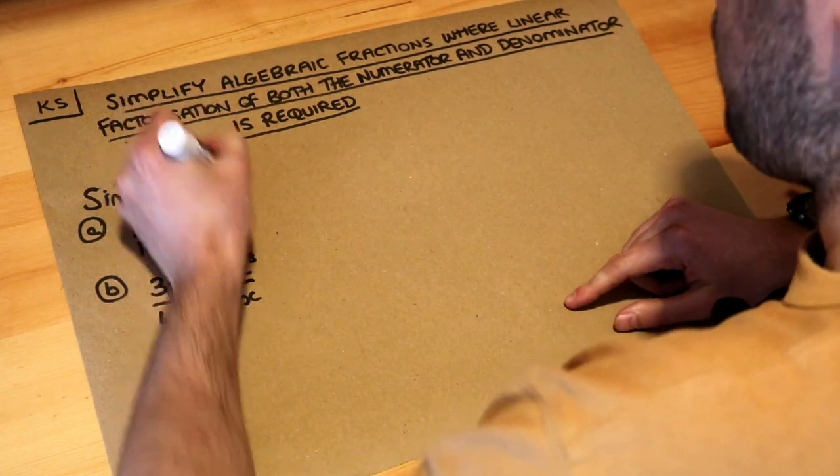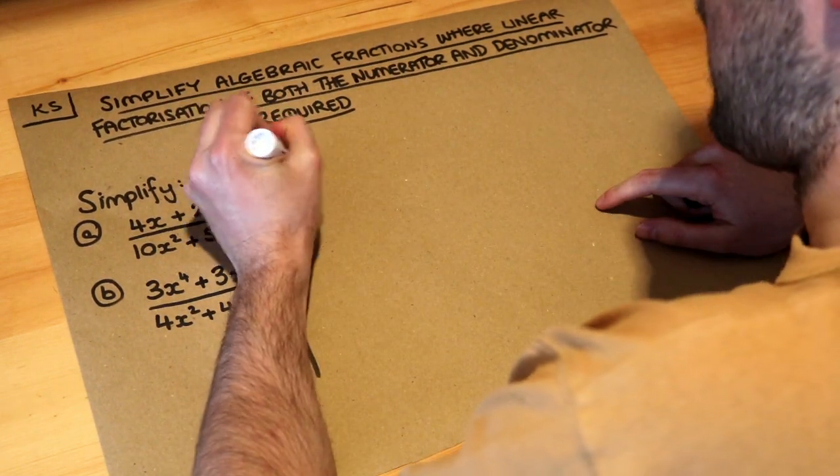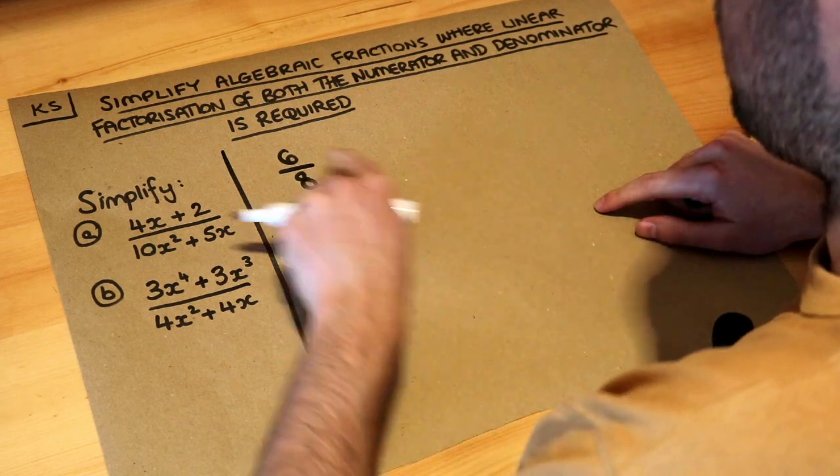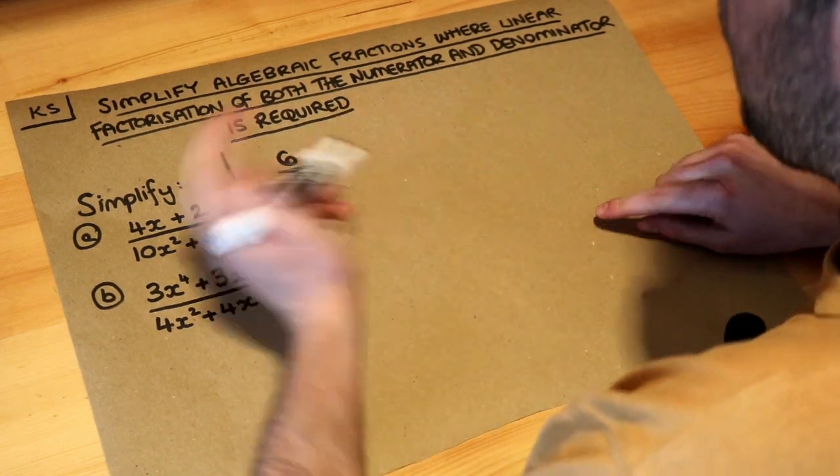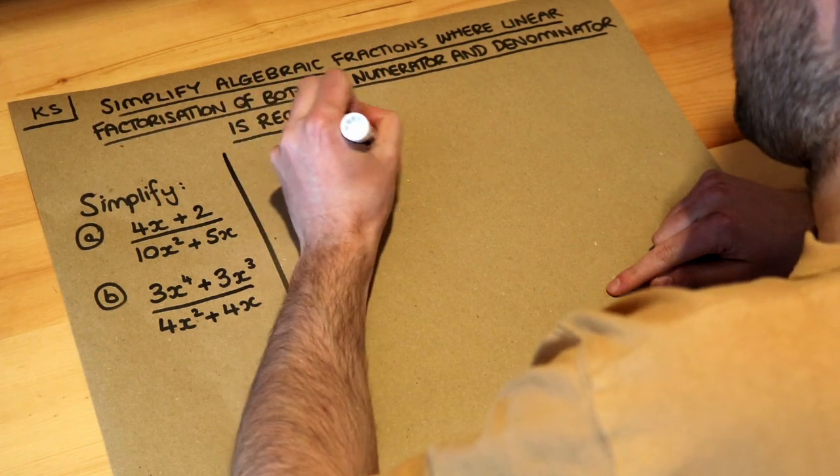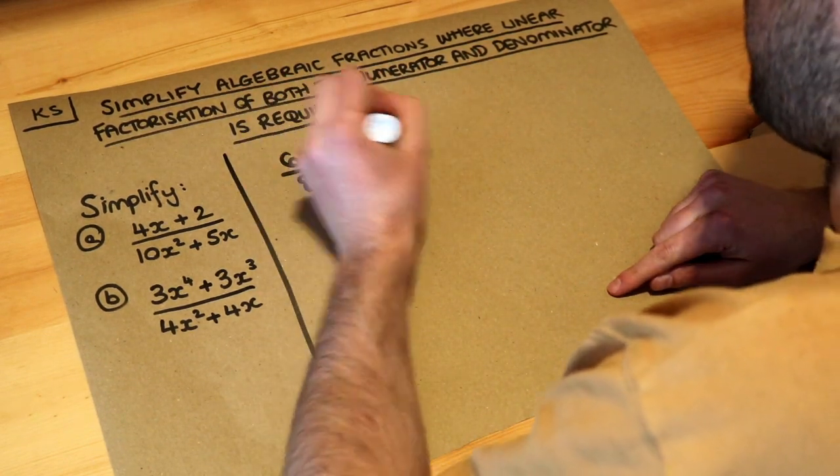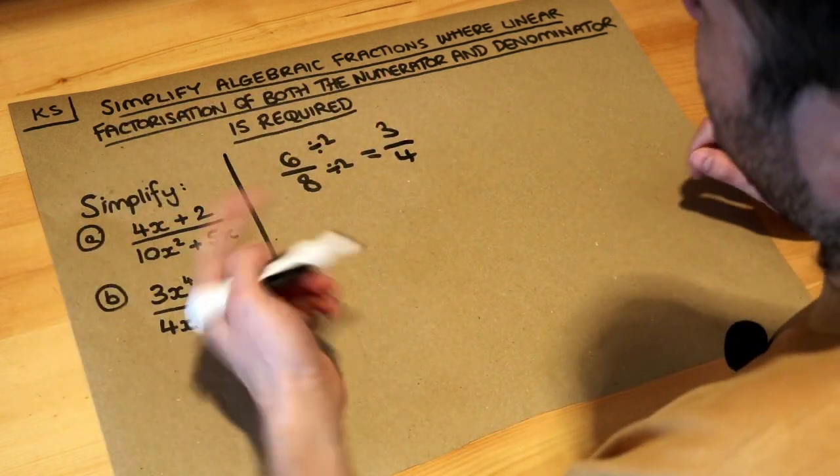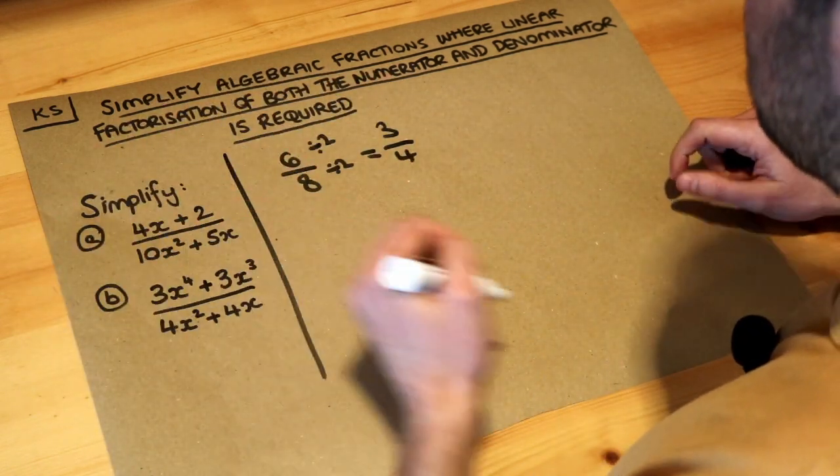So let's remember how we simplify fractions in general. If I had 6 over 8, you look for a common factor. What's common to 6 and 8? They both have a factor of 2, so we divide top and bottom by 2. Then 6 divided by 2 is 3, 8 divided by 2 is 4. So that's how in general we simplify fractions - we look for something to divide by.